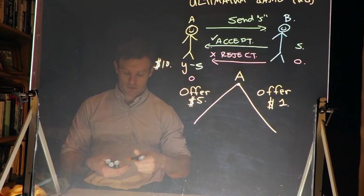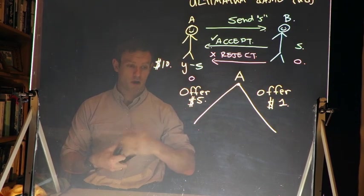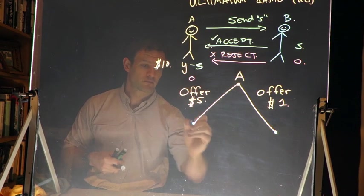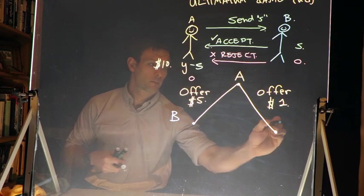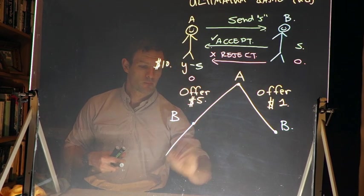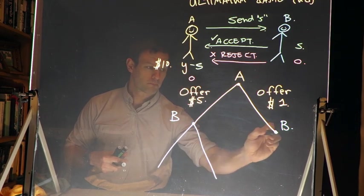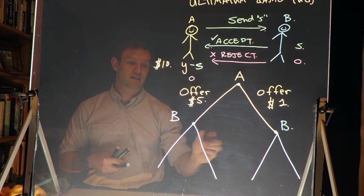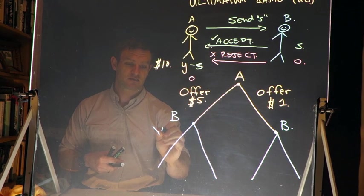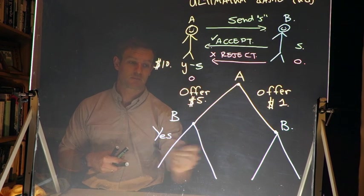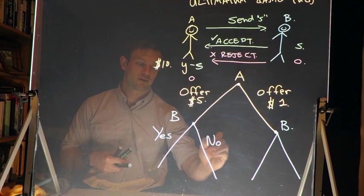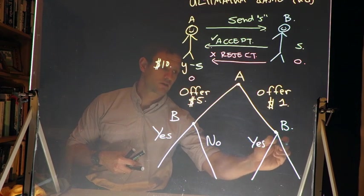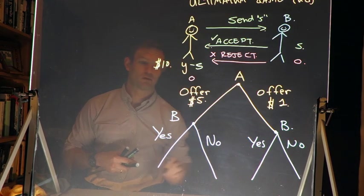So S is equal to five, and here it's going to be offer one. In each of those cases then, B can respond, and B has the choice at each point where they can make a decision. And I'm going to make this slightly easier. I'm just going to say yes if they accept, and no if they reject.